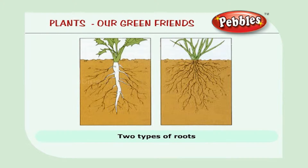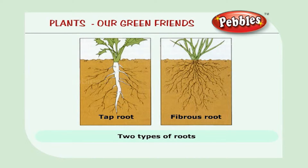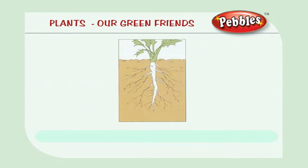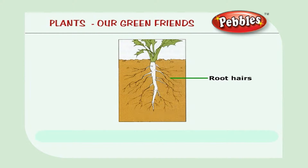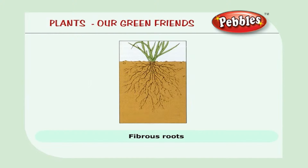There are two types of roots: taproot and fibrous roots. The main root is called taproot. It has many branches and ends with tiny root hairs. A cluster or group of small roots are called fibrous roots.